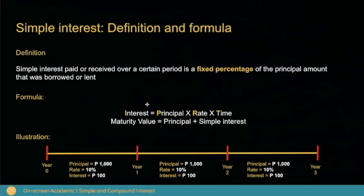What is the formula for simple interest? You can get the simple interest by multiplying the principal times the rate and the time. Or in short, you can get I by multiplying P times R times T.